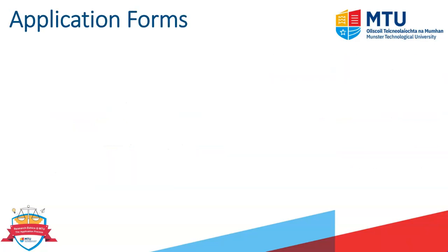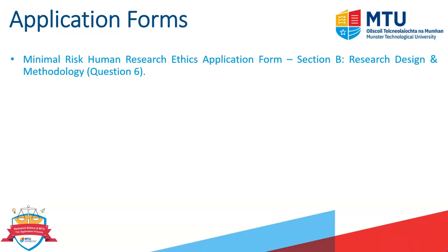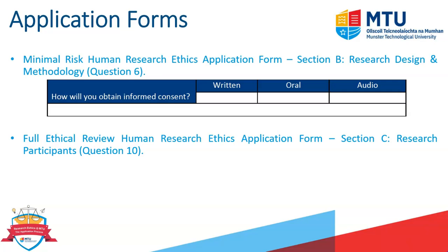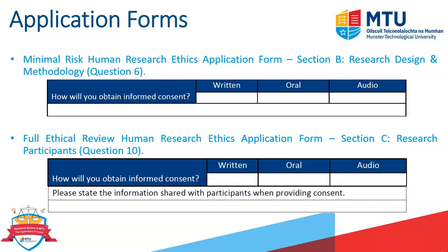When it comes to our application forms — since this overall course is about the application process — we have two forms. In the minimal risk human research ethics application, Section B, Question 6 asks how you will obtain informed consent. In the full ethical review human research ethics application, Section C, Question 10 also asks how consent will be obtained, but additionally asks what the participant will be consenting to and what information will be given to them.